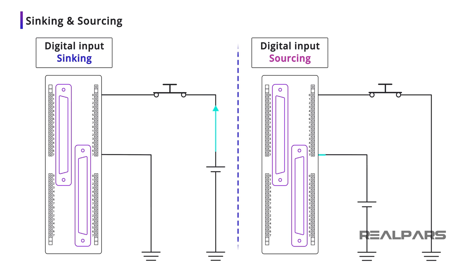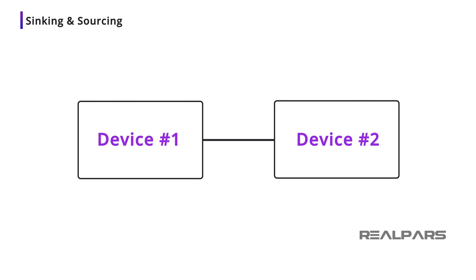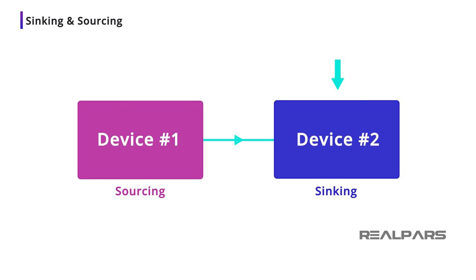Let's spend some time clearing up any misconceptions you might have about these terms. When we talk about sinking and sourcing, it's all about defining the direction of conventional current flow between two devices. Think of it this way: current is flowing between device number 1 and device number 2. The current is flowing from device number 1 to device number 2. Therefore, we say device number 1 is sourcing the current and device number 2 is sinking the current.